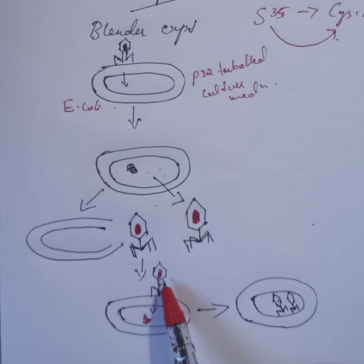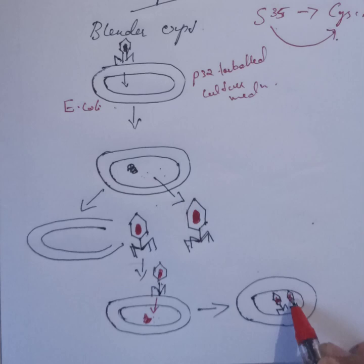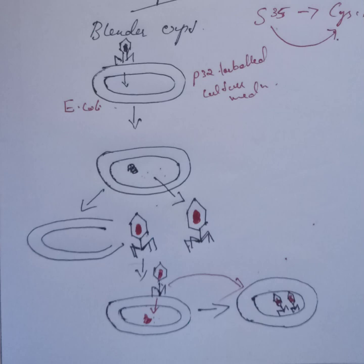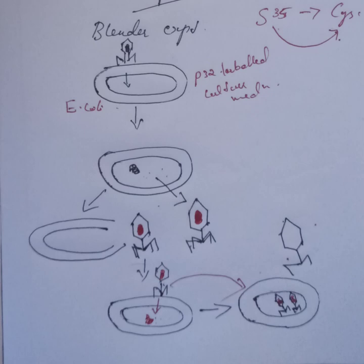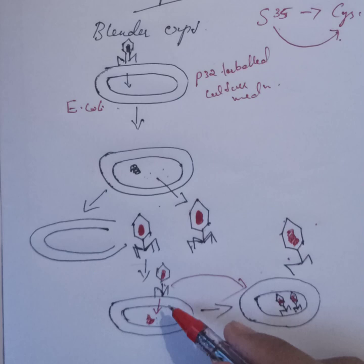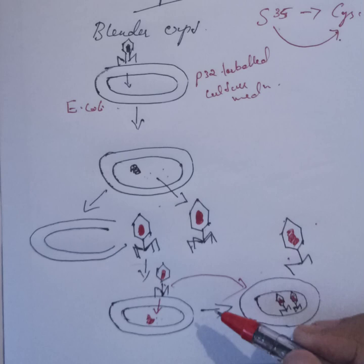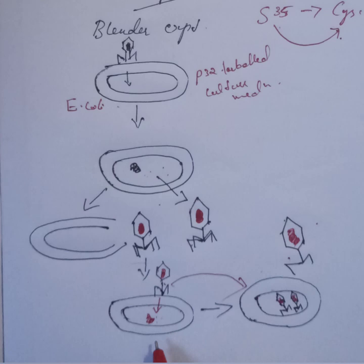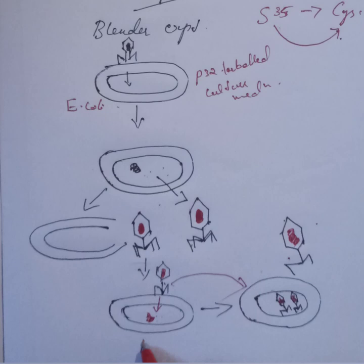By the reproduction of the labeled T2 phage DNA — that is, the replication, transcription, and translation of phage DNA — all the processes involved in reproduction occur, and all the phage structural particles are produced. By cell lysis, the newly formed progenies are released which contain P32-labeled DNA. So all the progenies in this generation have P32-labeled DNA. From this experiment we can understand that DNA is transferred or passed from one generation to the next generation.